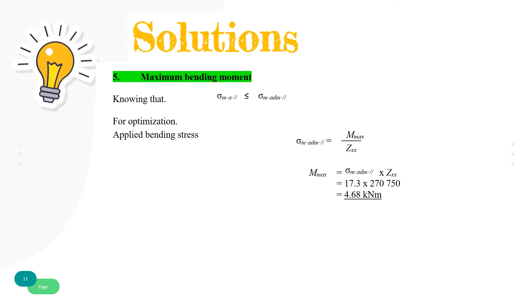Knowing that the applied bending stress must be less than or equal to the permissible bending stress parallel to grain, for optimization, applied bending stress is maximum moment divided by section modulus. Hence, the magnitude of maximum bending moment for a main beam is 4.68 kNm.